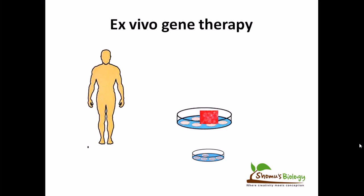We'll culture that tissue for several generations, and during that time we'll prepare the good gene we need to use for the substitution. In this case, that right amount of good gene is delivered by some other cell which is cultured in this plate.